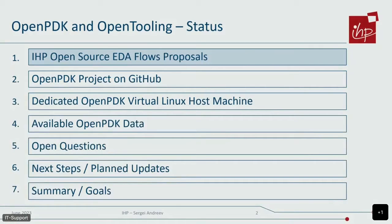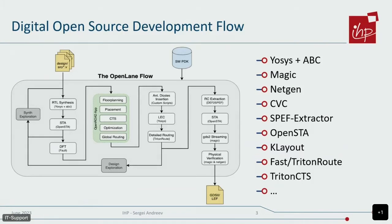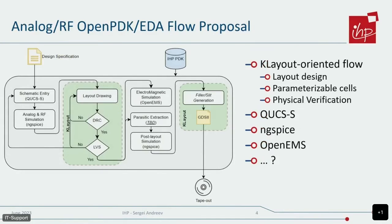The first thing I want to show you is our proposal of the OpenPDK EDA flow for analog and digital designs. Here you can see the flow diagram over the already well-known and established open source digital design development flow, OpenLane. It has a lot of support from the community, is used in a lot of designs, and uses a lot of open source tools inside. And here is our view of what the analog open source flow should look like.